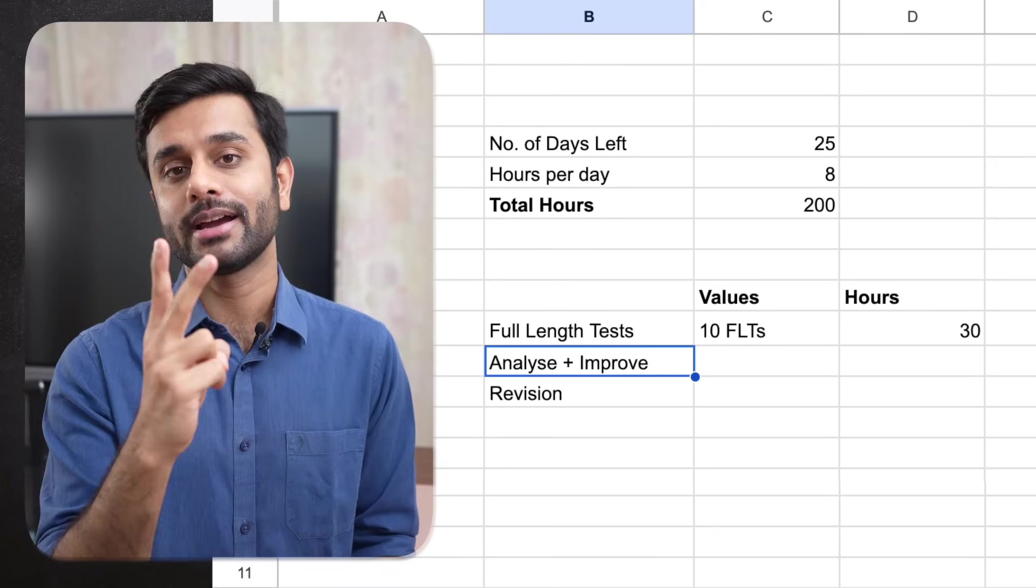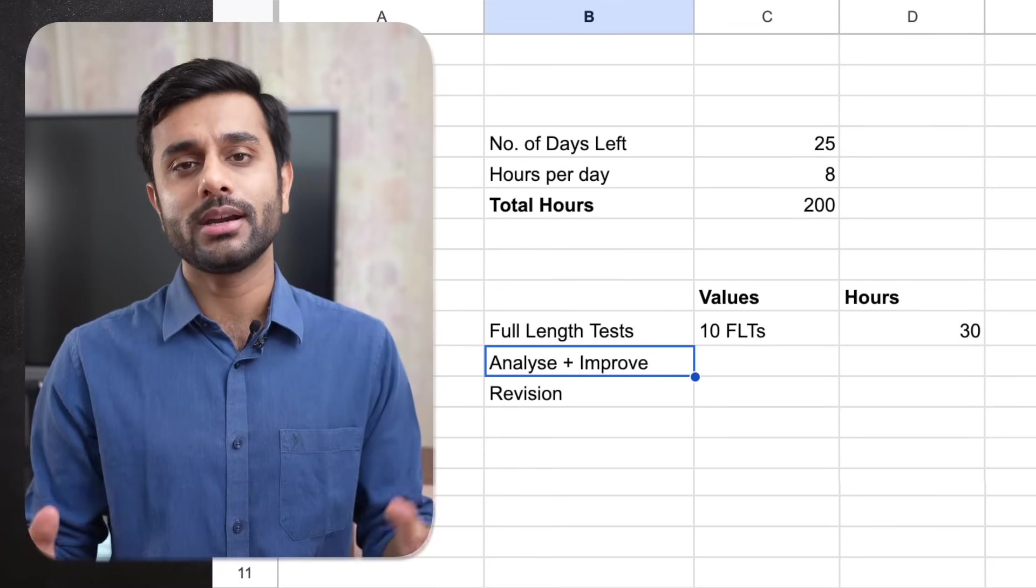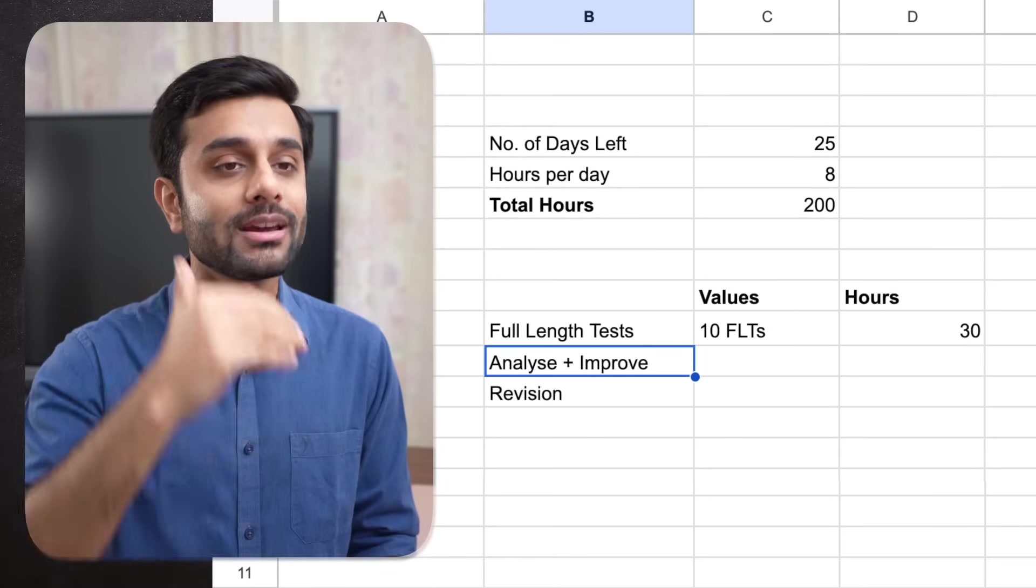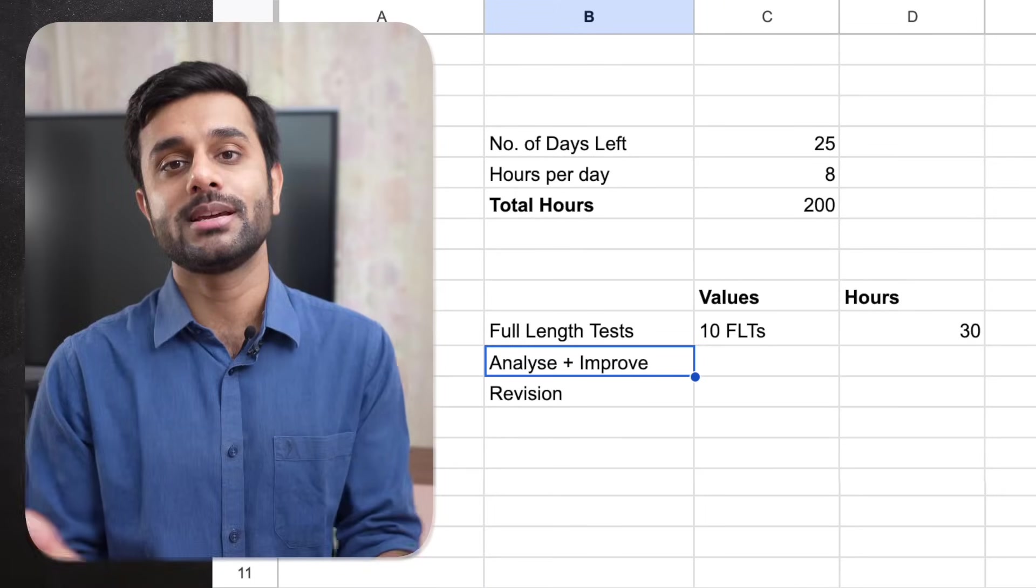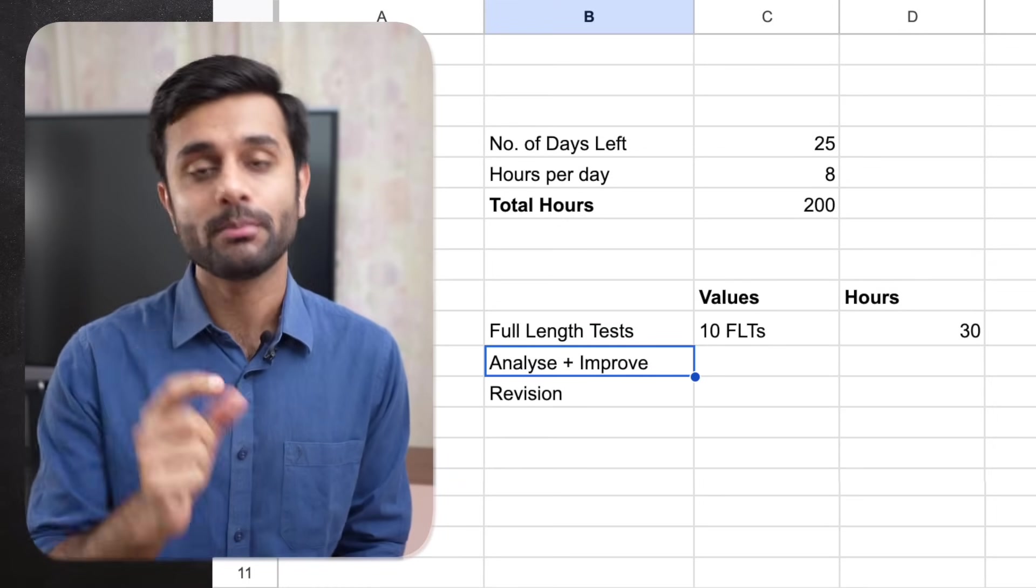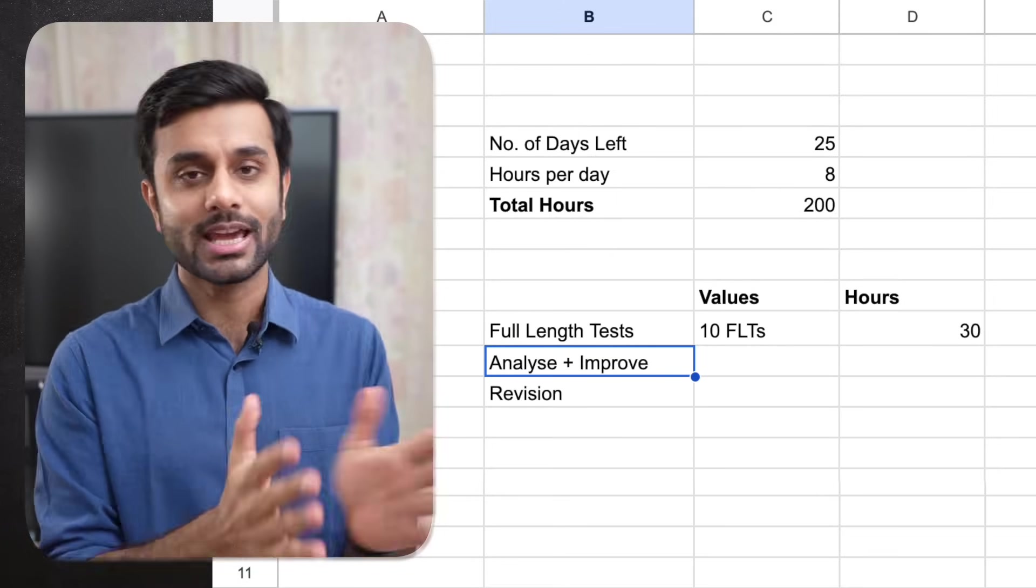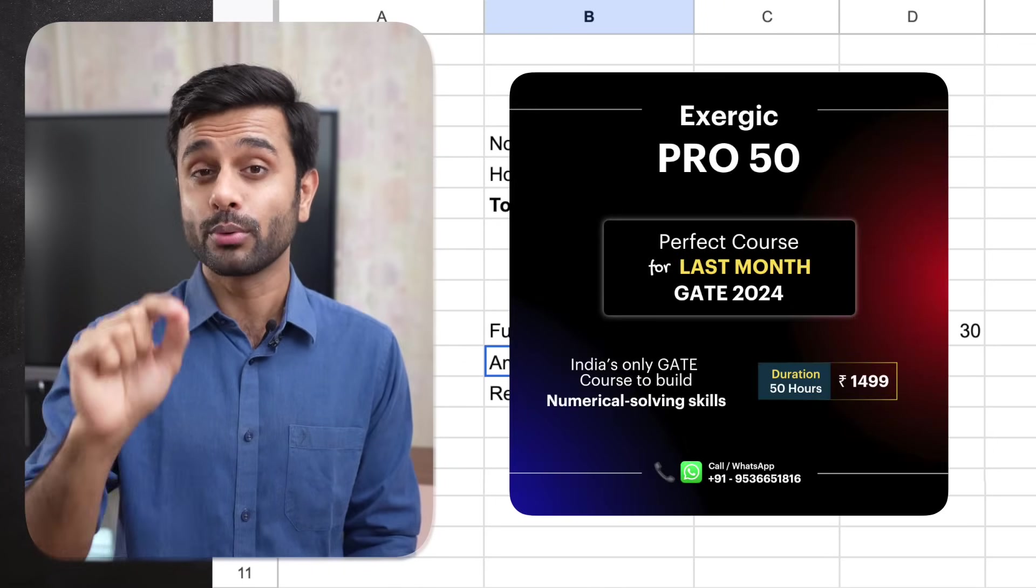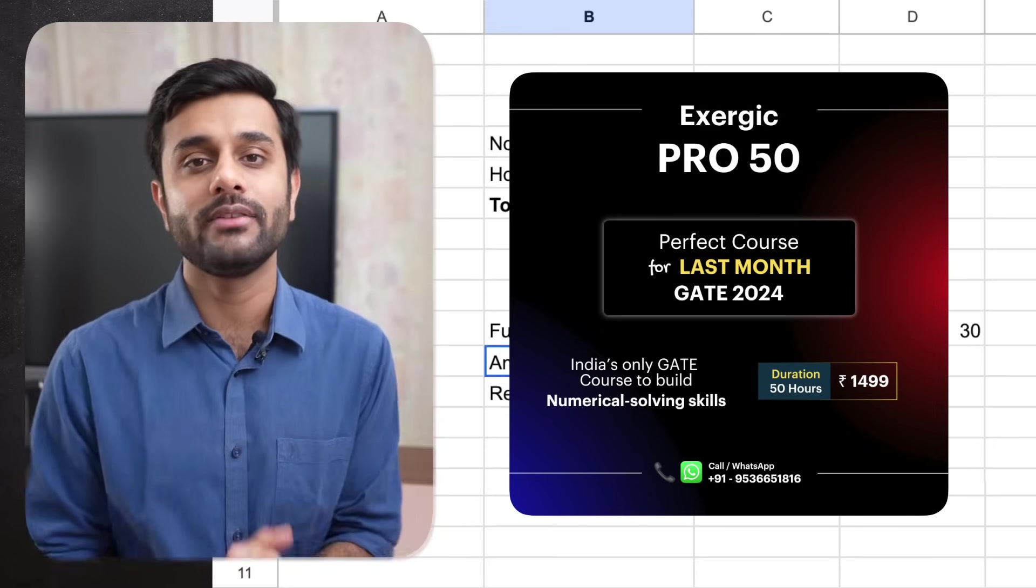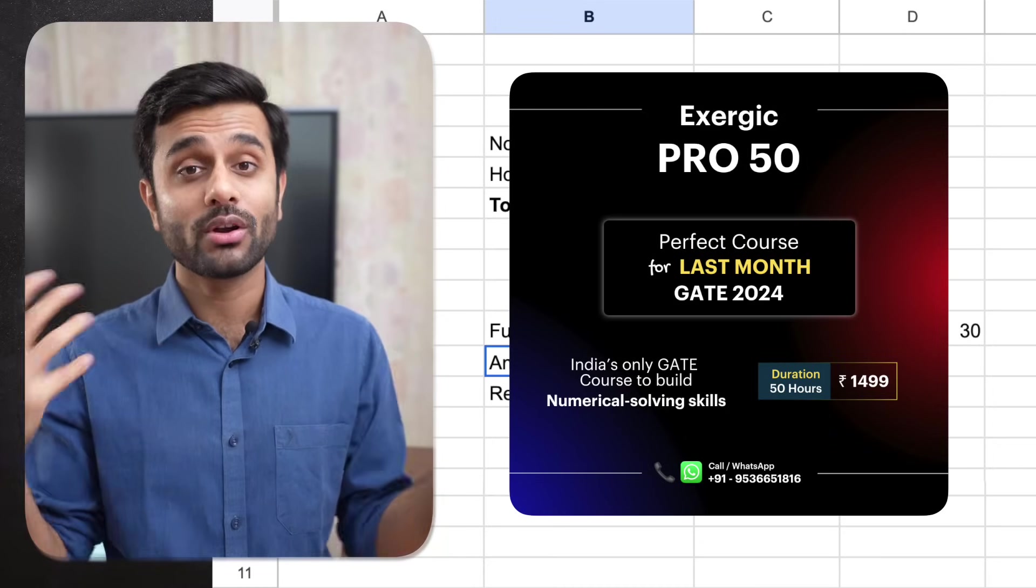And then how to improve it? There are 2 major areas of improvement which you need. Firstly is numerical solving skills. Your ability to solve numericals is going to be very important. Many topics and questions from those topics, even after knowing formula, even after knowing concept, you will not be able to solve because you might not be able to apply the concepts. So application of concepts in a numerical, or that we call as numerical solving skills, that's why it is very much important. Definitely you can go for Pro 50, Exergic Pro 50, which is perfect for last month. It has a duration of 50 hours and you can definitely watch it at 1.25 and 1.5x to cover it even in lesser time.